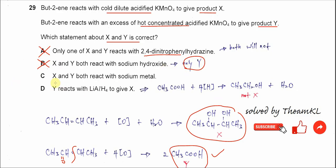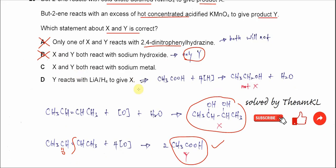C, X and Y both react with sodium metal. Yes, it's correct. Alcohol will react with sodium metal. And the carboxylic acid also will react with sodium metal. So this one is correct.